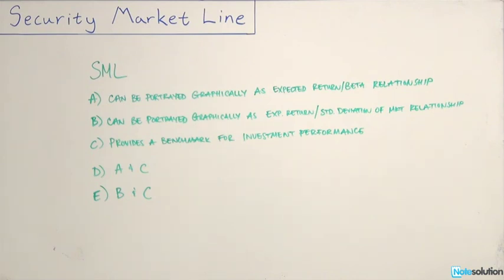So let's look at our options and see if we can eliminate some right away or if we can look at it logically. We know that the SML does give us the expected return for any risky assets, therefore we can use the expected return to compare it to the current return that the security is providing and the pricing, which means that we can use it as a benchmark for evaluating investment performance. So we know that C is correct.